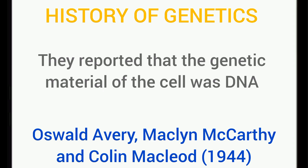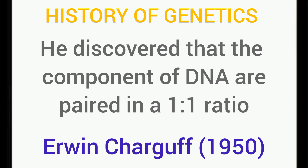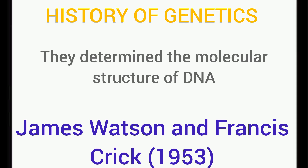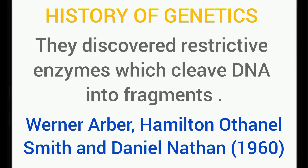Avery and McCarty also reported that the genetic material of the cell was DNA, found in the nucleus of the cell. Chargaff discovered that the components of the DNA are paired in a one-to-one ratio — A must be paired with T, and G must be paired with C. Rosalind Franklin and Raymond Gosling conducted an X-ray diffraction study to identify the image of the DNA and reported that it was actually a double helical structure. James Watson and Francis Crick in 1953 determined the molecular structure of deoxyribonucleic acid — the DNA.